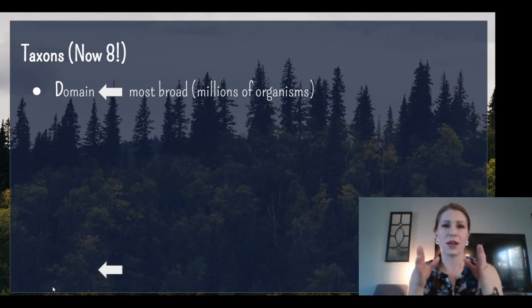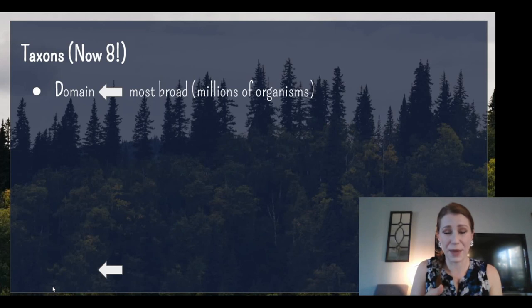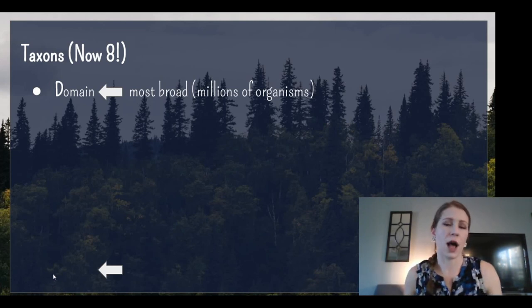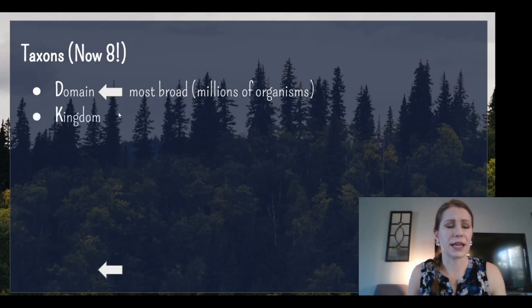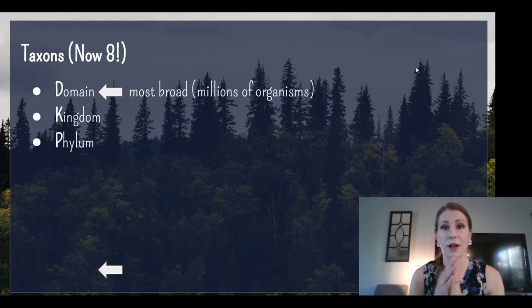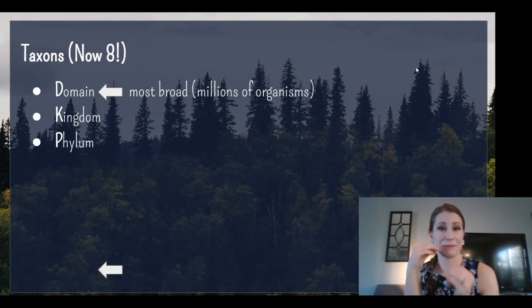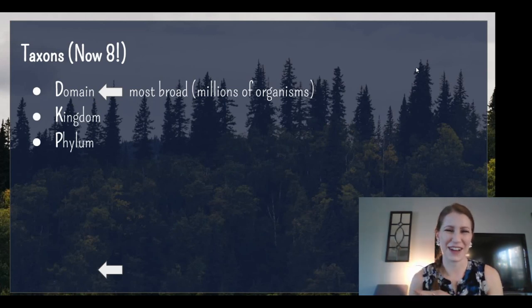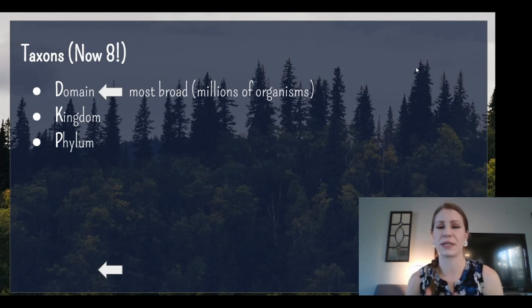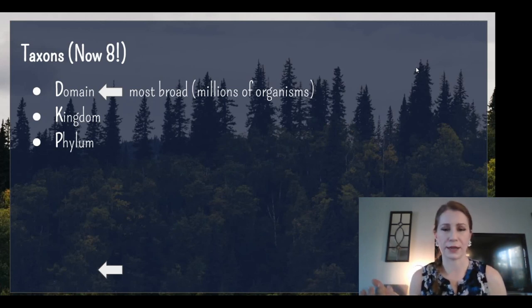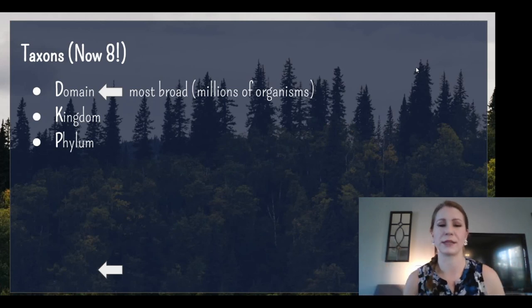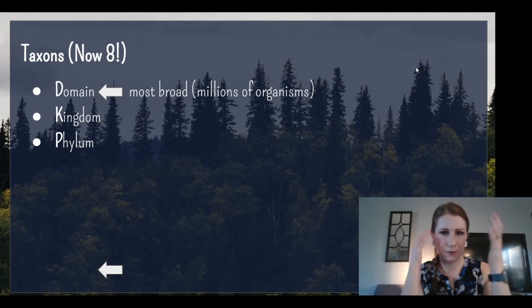As we move down this list, we're going to get more specific to an organism, but we'll also see a larger number of organisms. Kingdom — we have six kingdoms. I'll go through all six in a little more detail in other videos, split into prokaryotic kingdoms, bacterial kingdoms, and eukaryotic kingdoms, which are non-bacterial organisms, to make the information a little easier to integrate.